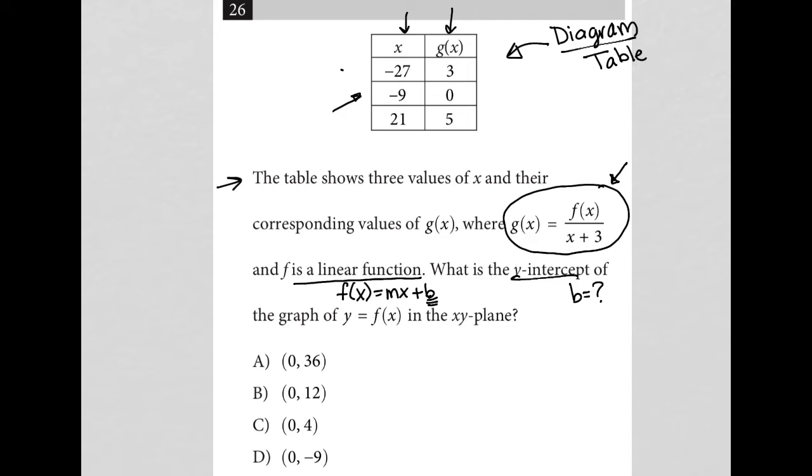Taking this first row here, when x is negative 27, g of x is three. If I put that into this equation, that means g of x would turn into three equals f of x would turn into f of negative 27 over x would turn into negative 27 plus three.